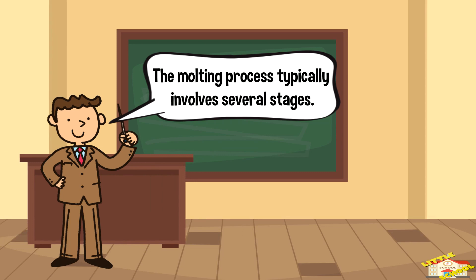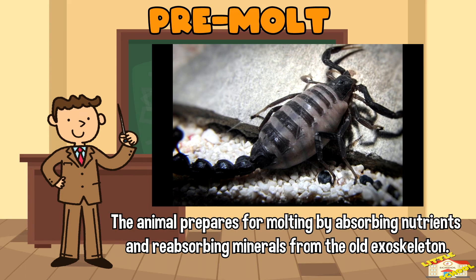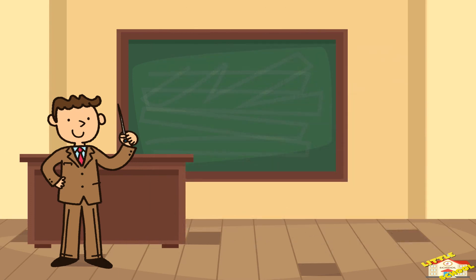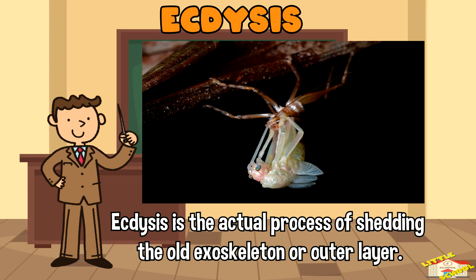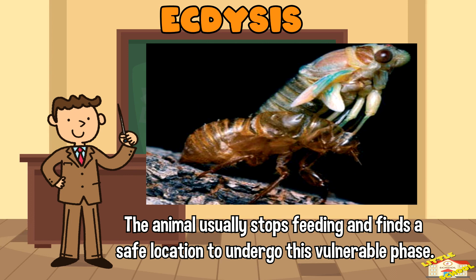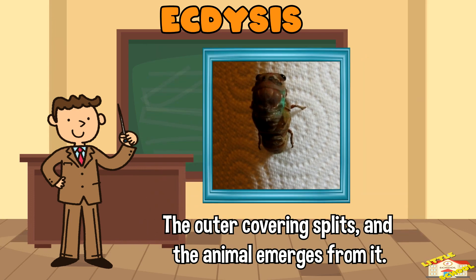The molting process typically involves several stages. Pre-molt: during this stage, the animal prepares for molting by absorbing nutrients and reabsorbing minerals from the old exoskeleton. Ecdysis: this is the actual process of shedding the old exoskeleton or outer layer. The animal usually stops feeding and finds a safe location to undergo this vulnerable phase. The outer covering splits and the animal emerges from it.